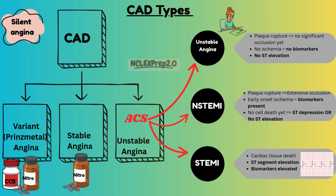They won't report the typical signs and symptoms such as crushing chest pain or chest pressure that feels like an elephant sitting on their chest. But if you randomly take an EKG on them, it will show some ST elevation.